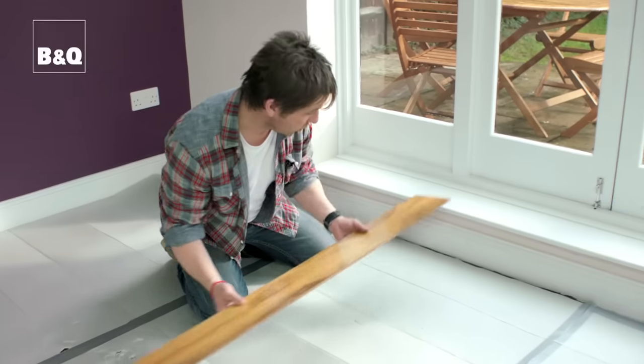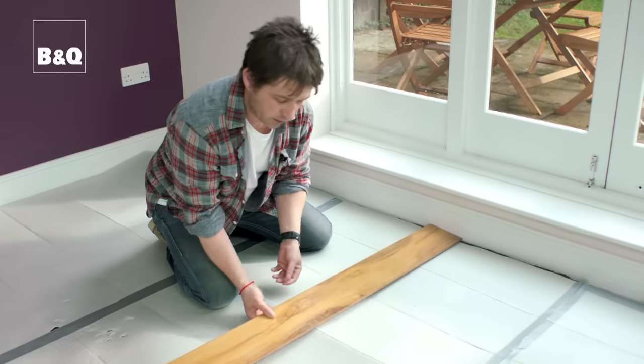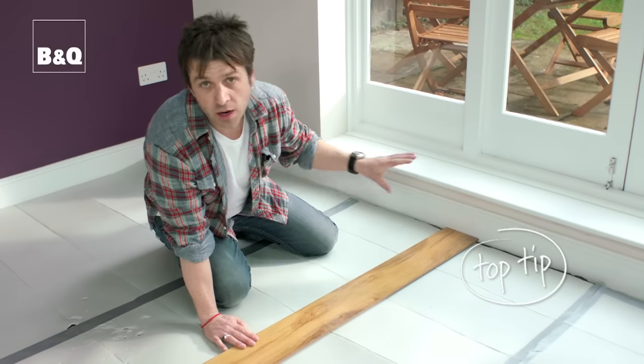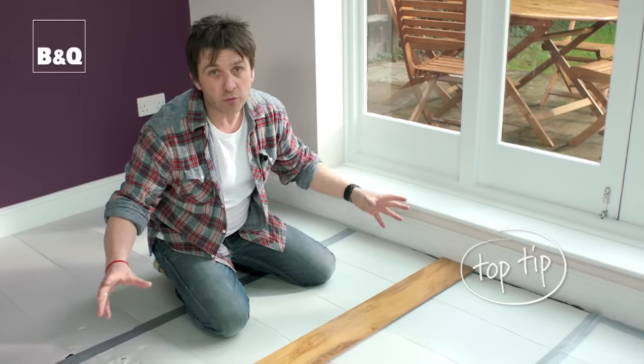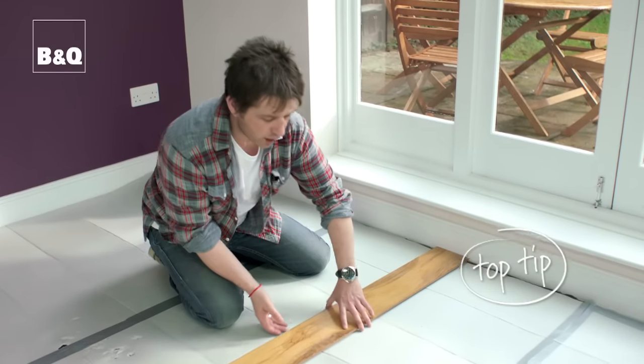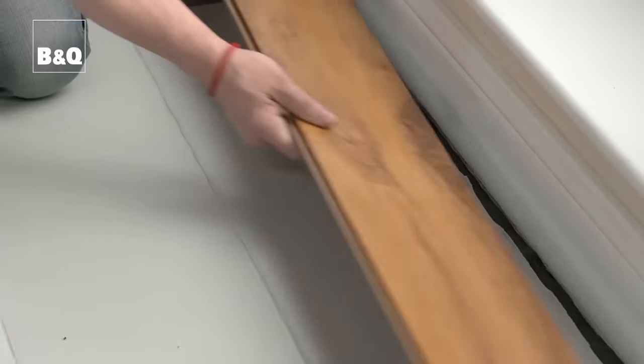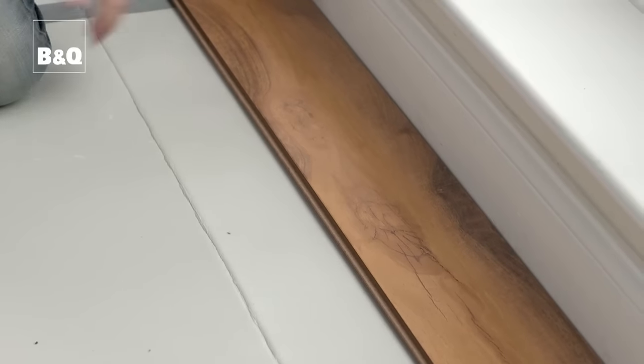Firstly, you need to decide which way you're going to lay your boards. Laying the boards towards a light source makes the joints less visible, and laying the boards across the width of the room will make a room feel wider. We're going to be laying our boards the length of the room, which is going to make the room feel longer.